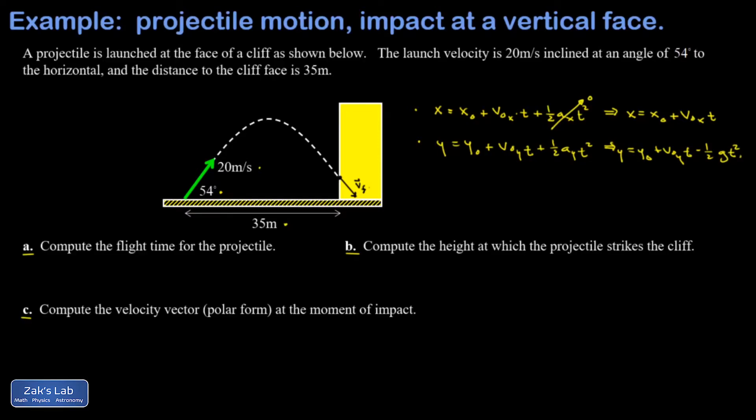Looking at question a—give me the flight time for the projectile—I happen to know the final x position is 35 meters right of the origin. Here's my origin where x and y are both equal to zero, right at the tail of that vector. Given that I have this information about the horizontal part of the motion, I'm going to start with a horizontal analysis of the problem.